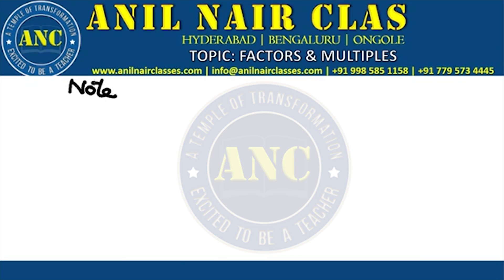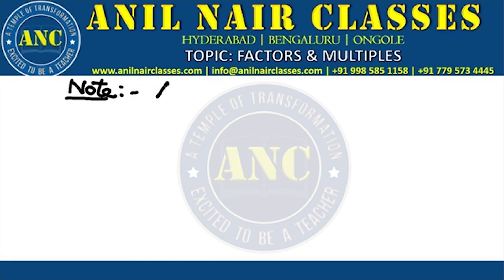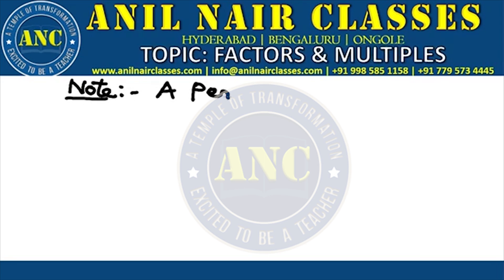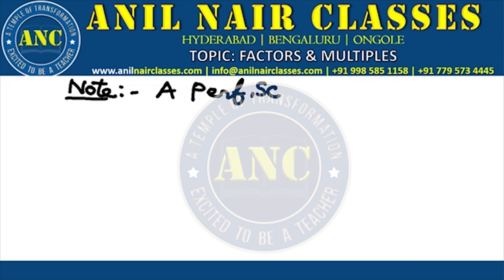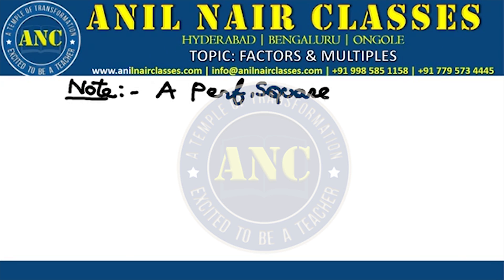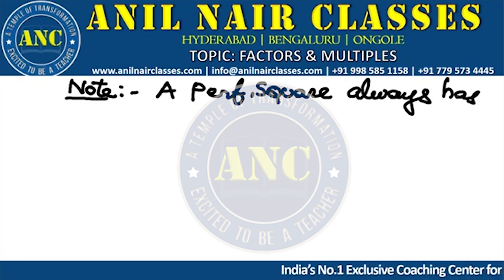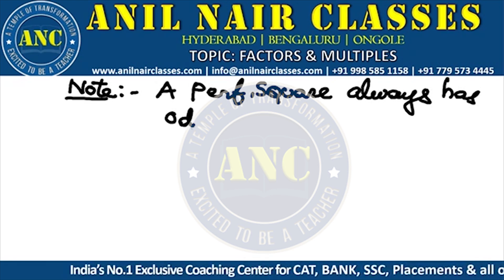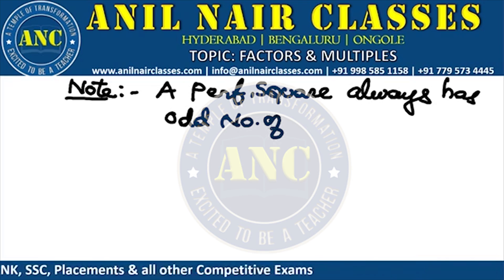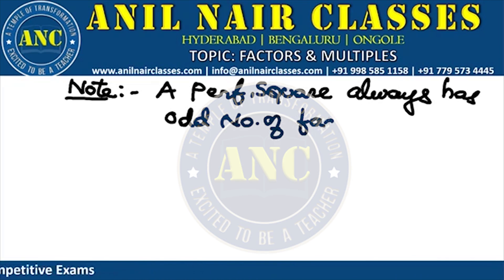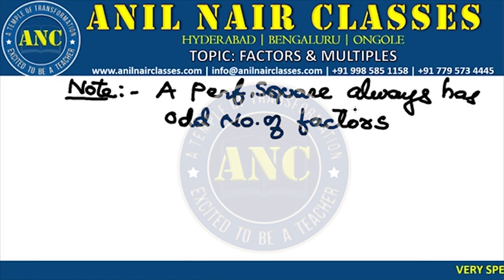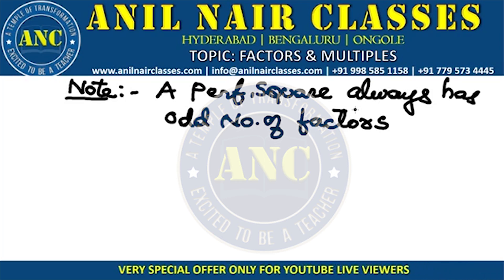Note: a perfect square always has an odd number of factors. If a number is a perfect square, the number of factors for that number will always be odd.